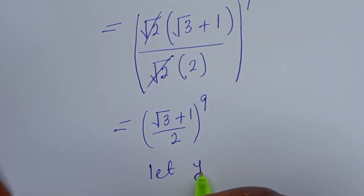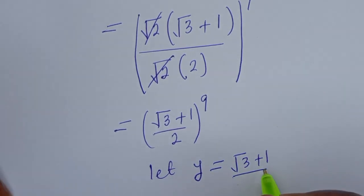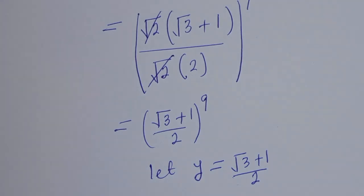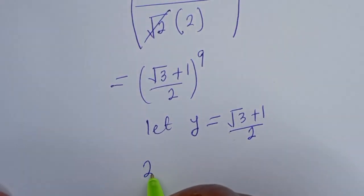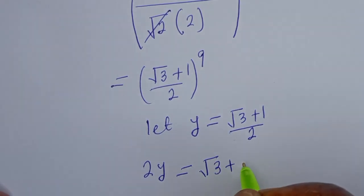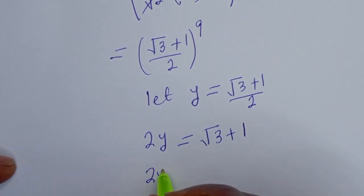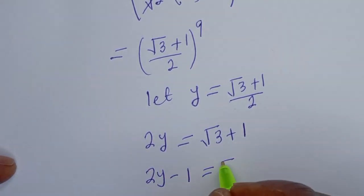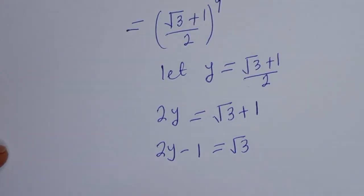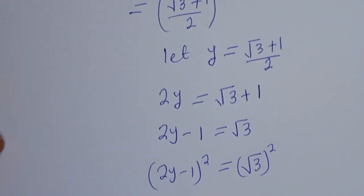Now let y equal root 3 plus 1 over 2. We can cross multiply: 2y is equal to root 3 plus 1. Bringing 1 to this side, we have 2y minus 1 is equal to root 3. Now let's square both sides of this equation: (2y minus 1) squared is equal to root 3 squared.